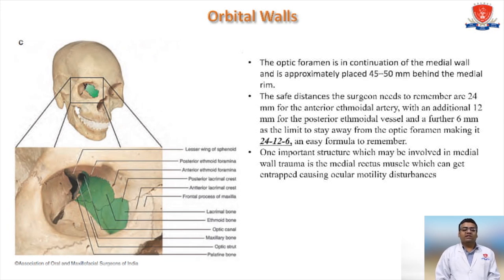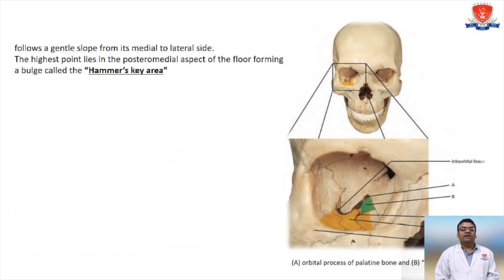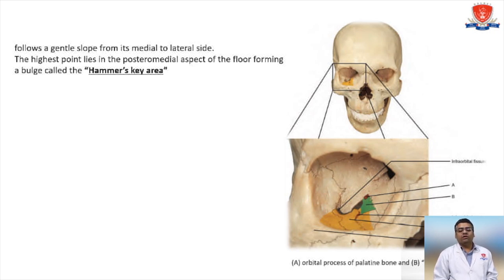The orbital floor follows a gentle slope from its medial to lateral side. The highest point lies in the posteromedial aspect of the floor, forming a bulging called Haller's area. The sagittal view of the floor forms a lazy-S form.